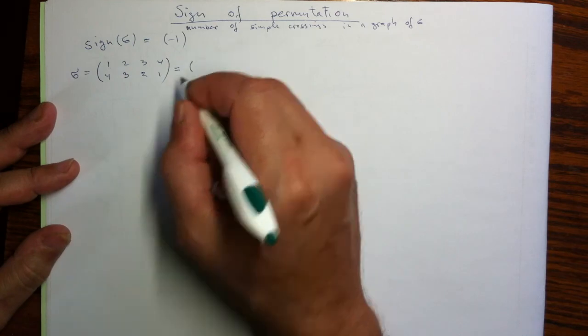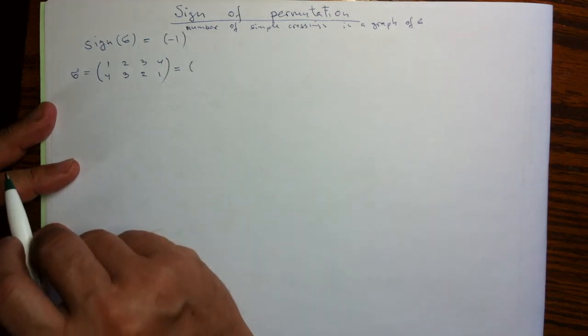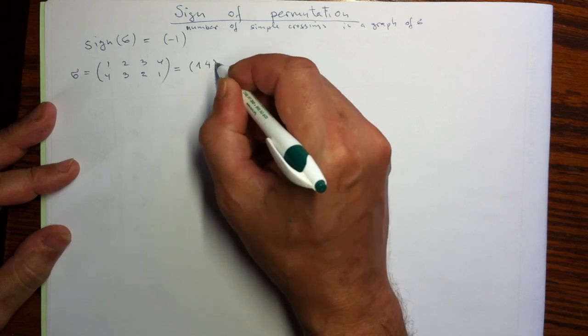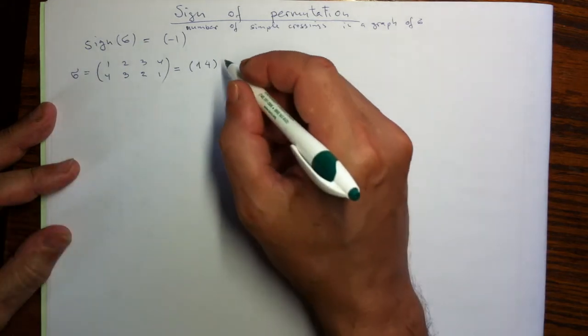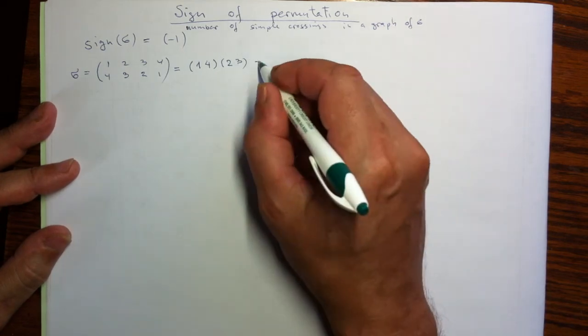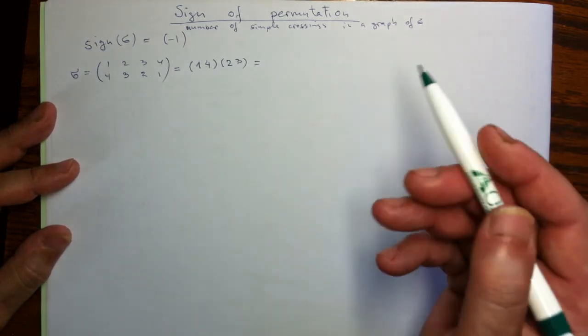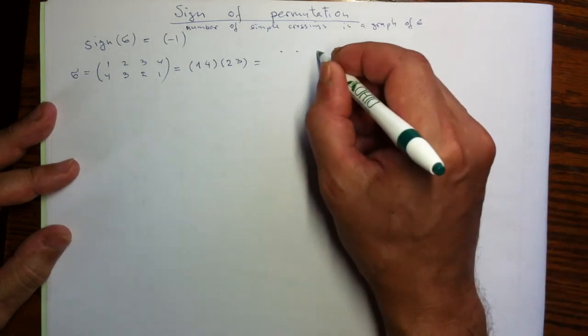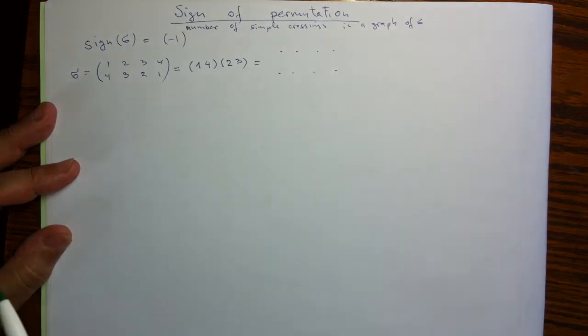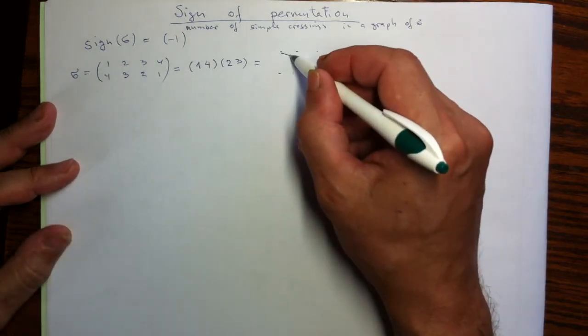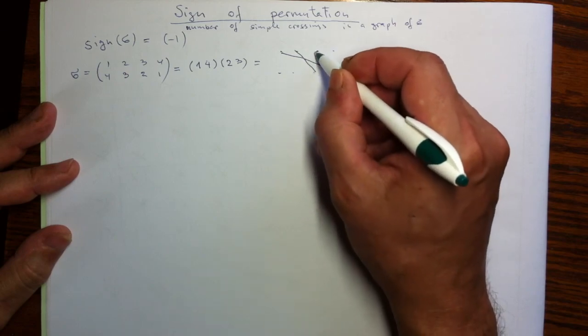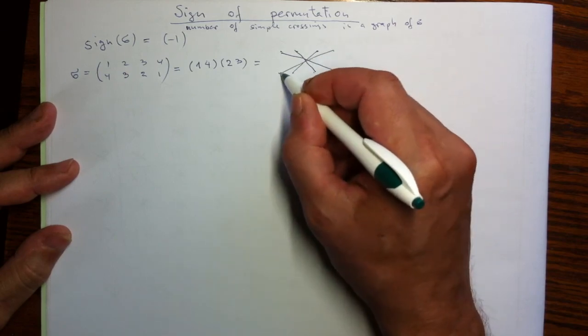If you prefer cyclic notations decomposing into independent cycles, we'll have two cycles in the decomposition. So one goes to four and back, first transposition, the second is transposing two and three. What I mean by a graph, we'll just take my four element set upstairs, downstairs and connect in the permutation pattern. One is connected with four, two is three, three with two, four with one.